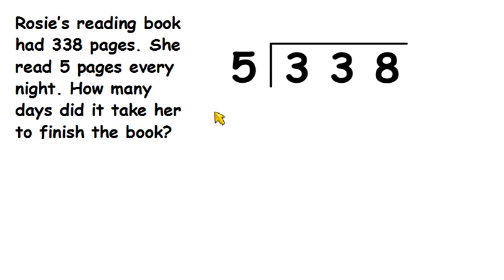OK, so here we've got a word problem which is going to require us to divide and then round our answer. Rosie's reading book had 338 pages. She read 5 pages every night. How many days did it take her to finish the book?